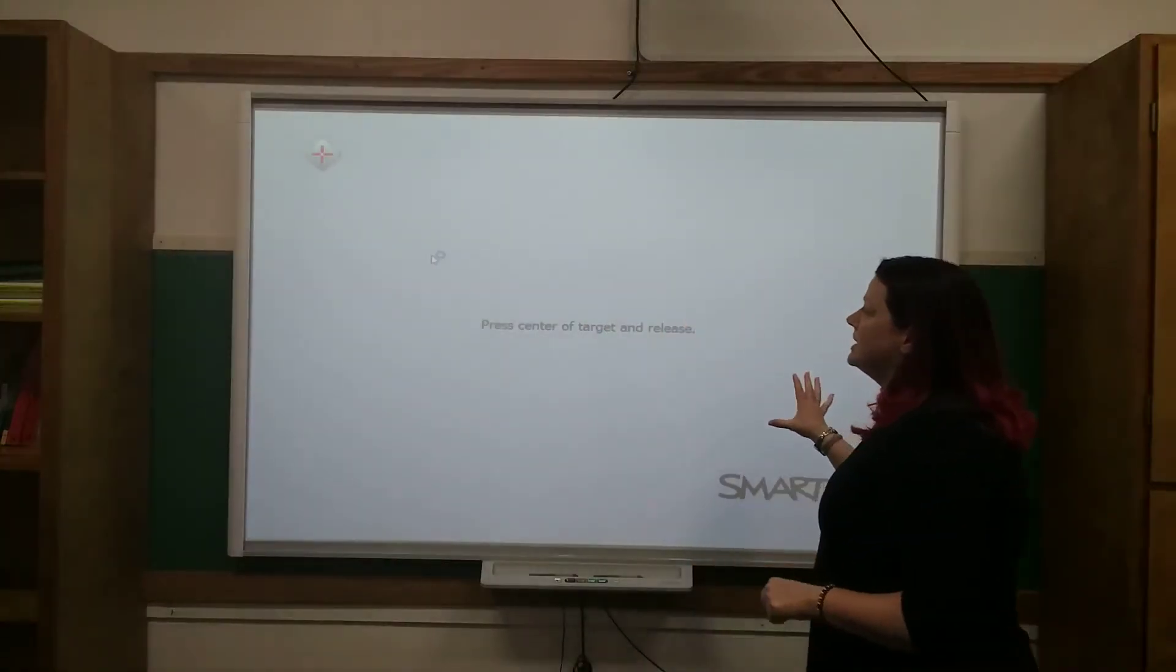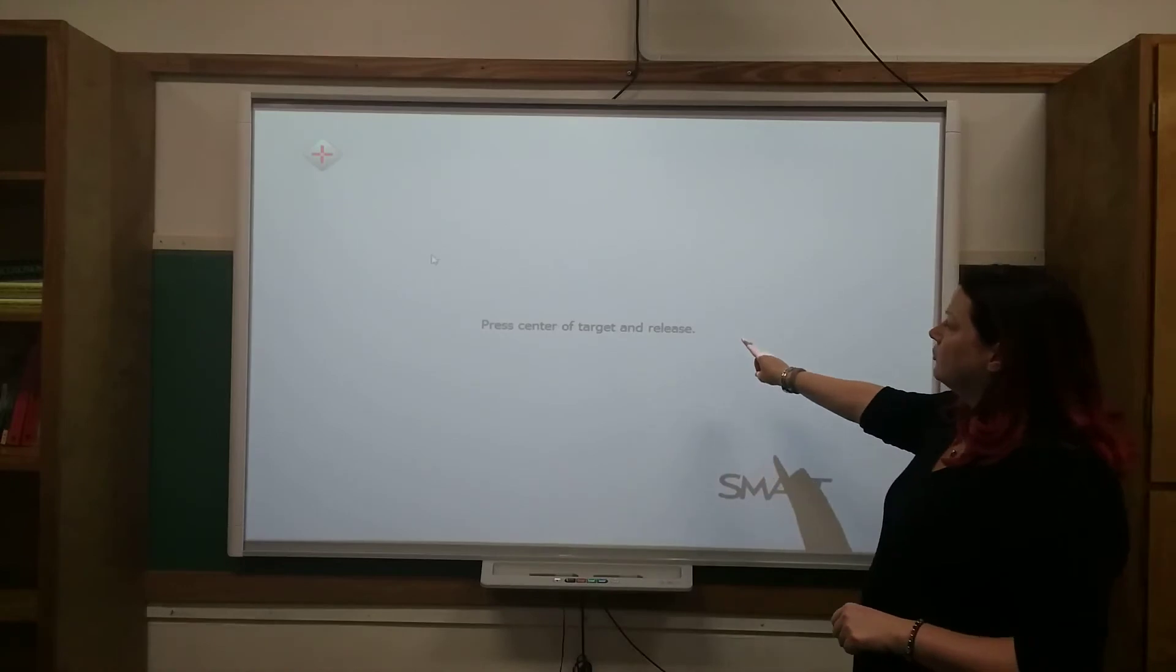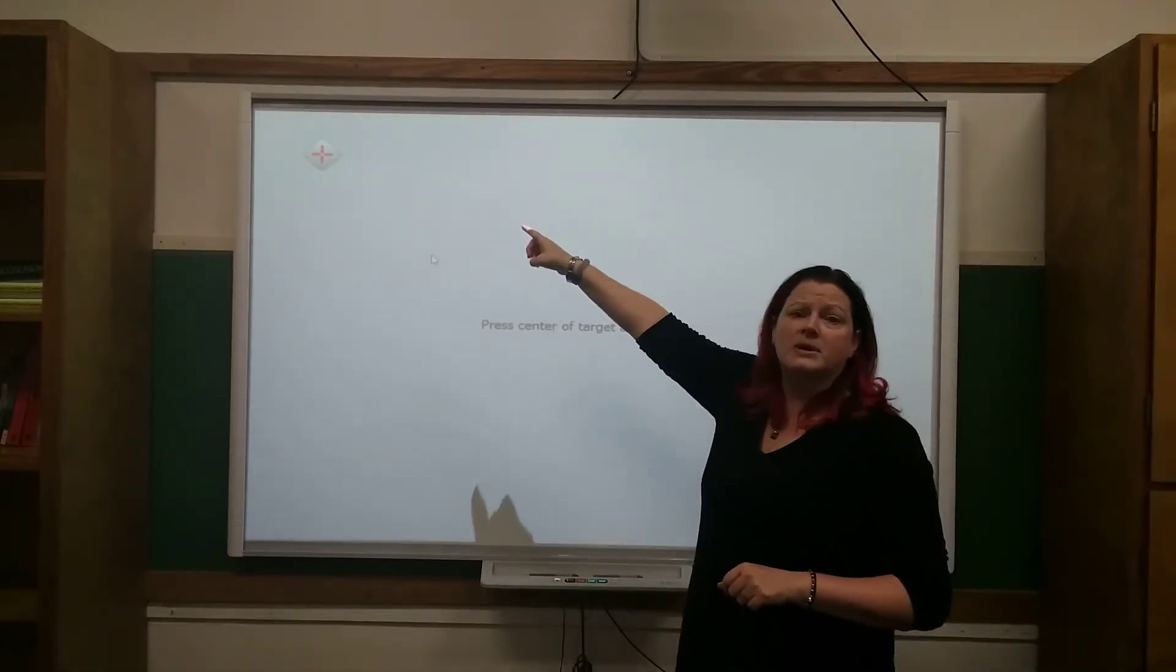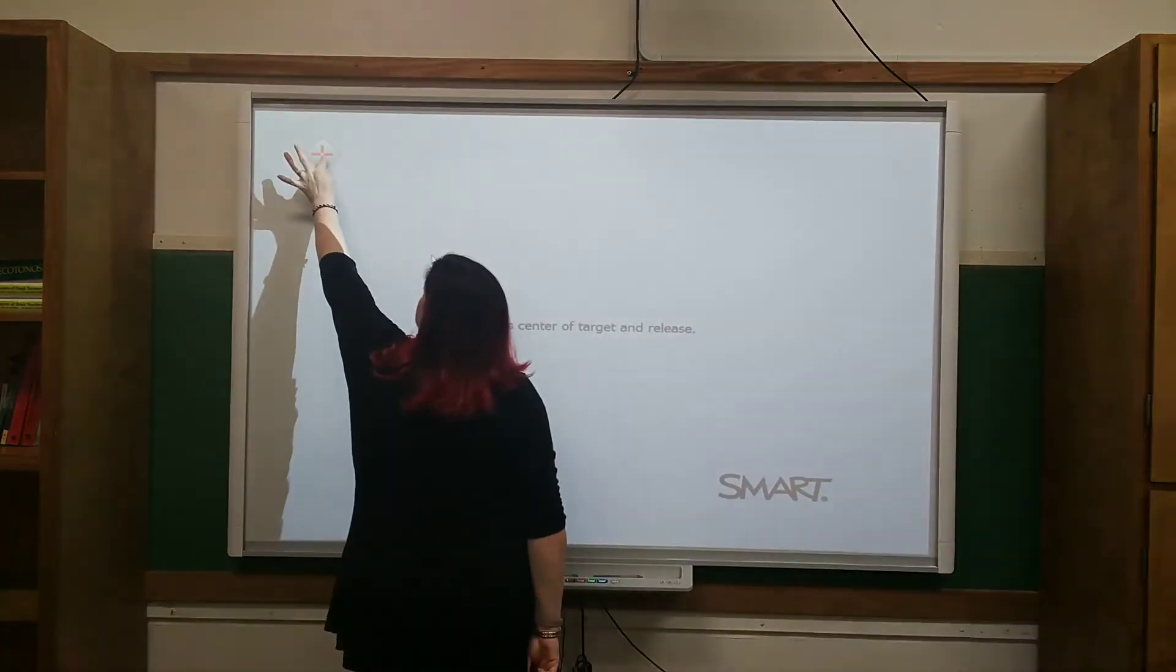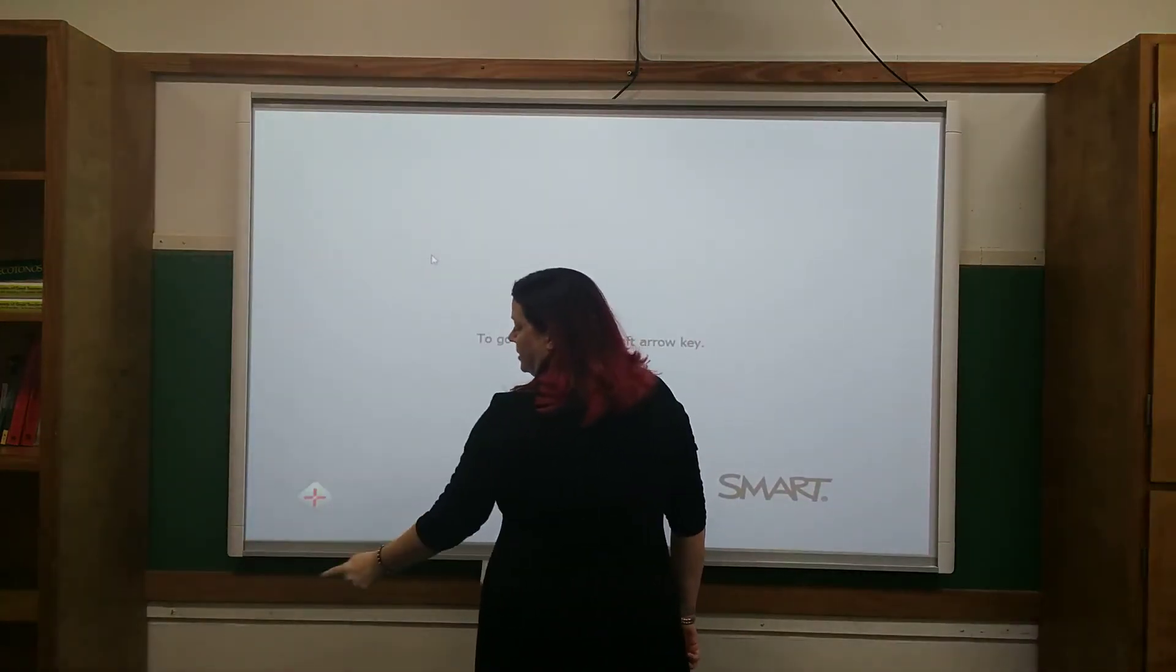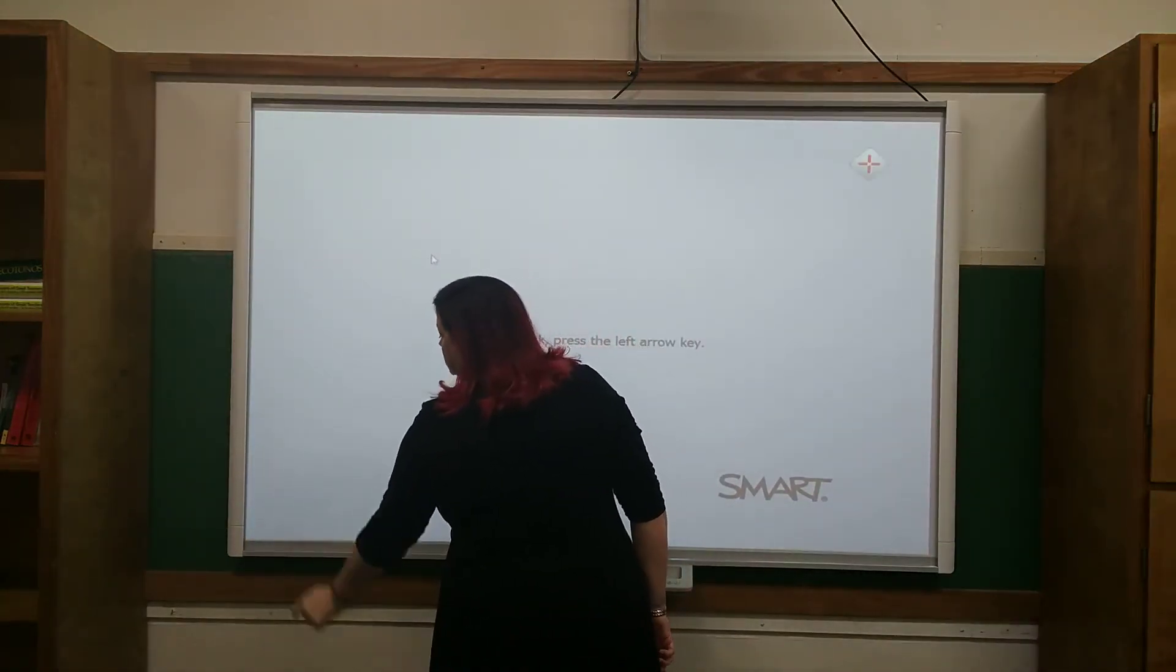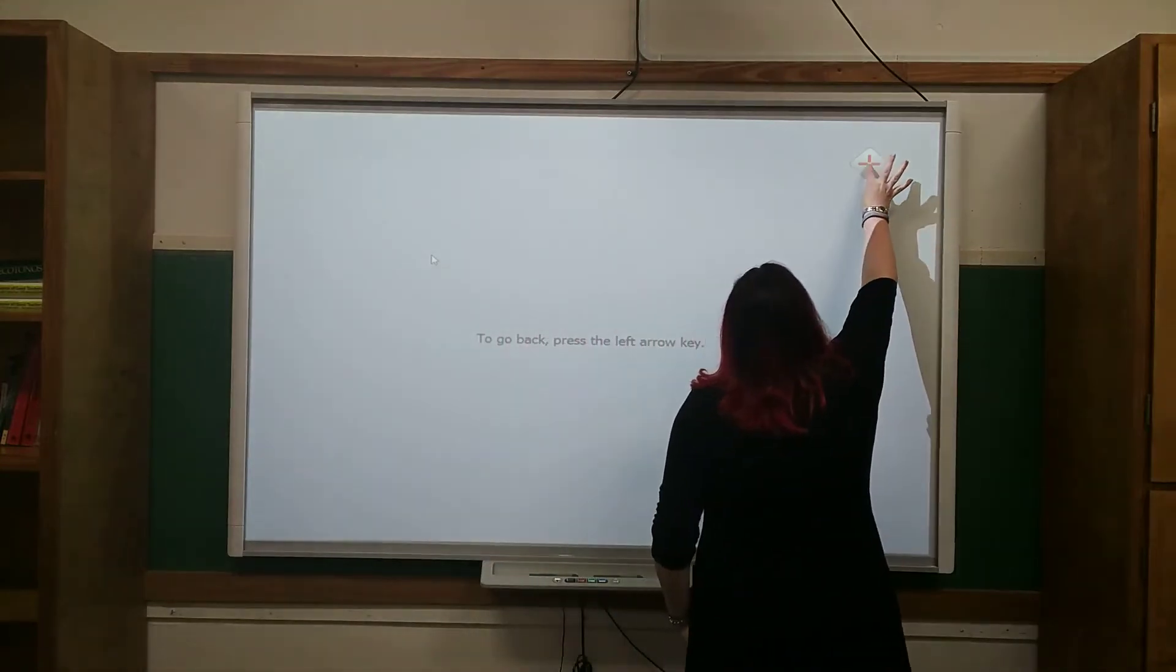it opens up this gray screen, tells you to press the center of the target and release, and the target always begins in the upper left-hand corner, and all you have to do is tap in the center of that target with your finger. It moves to the bottom left, top right, and then bottom right of the screen, and now we have oriented the board.